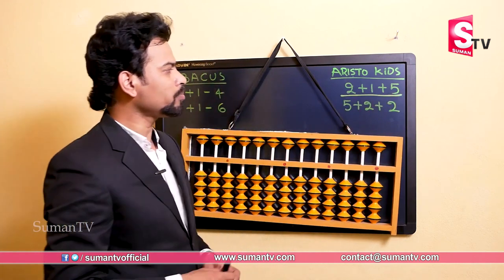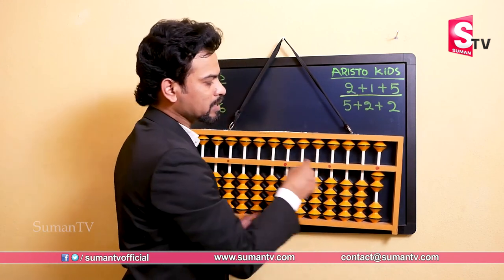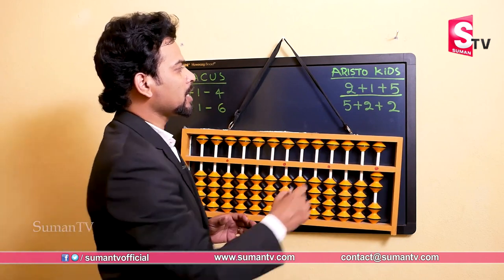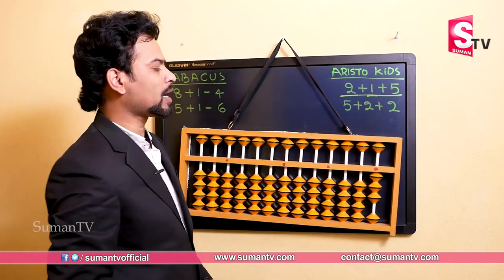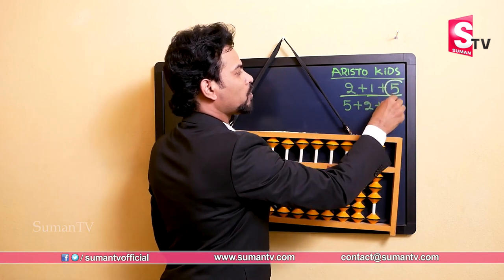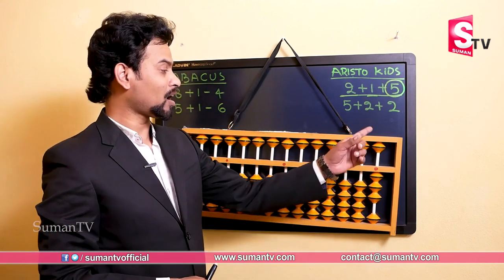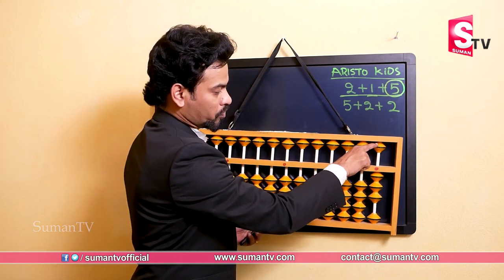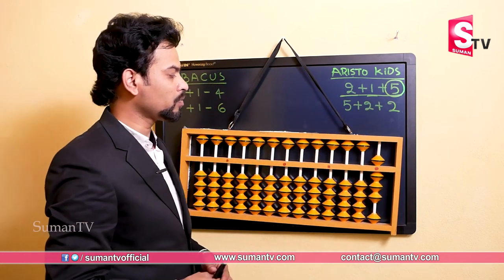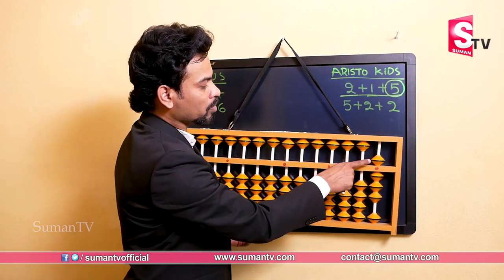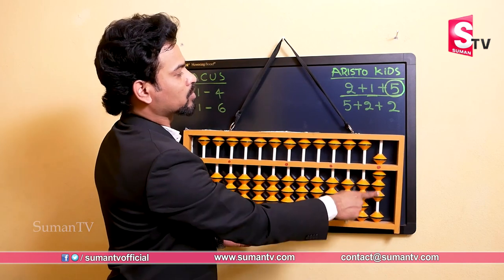Let's take the question two plus one plus five. First we do plus two — two beads up at a time. Then plus one — one more bead up, now we have three. Then plus five — we don't have five on the downside, we have five on the upside. So we bring the upper bead down using the index finger — that is plus five. Now two plus one plus five: counting from the top, five plus one is six, plus one is seven, plus one is eight. The answer is eight.